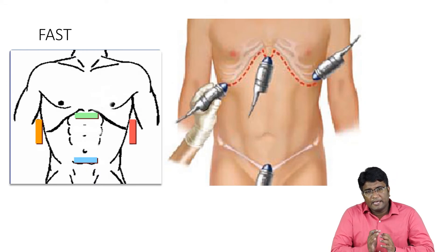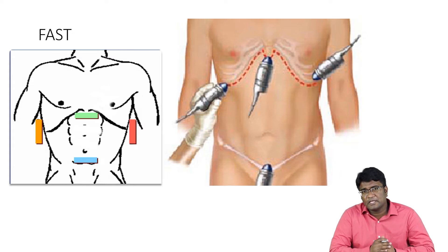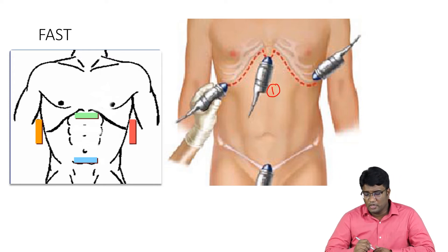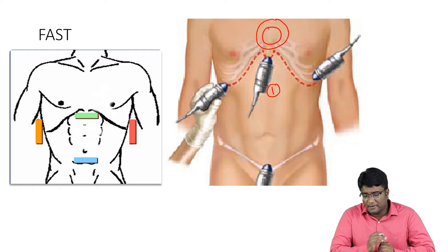In FAST, we do an ultrasound in a patient with abdominal trauma as an initial investigation. This initial evaluation of a patient of abdominal trauma with ultrasound is called FAST. In FAST, we put the ultrasound probe at four locations. The first is in the sub-xiphoid region to look at the heart and the pericardial space.